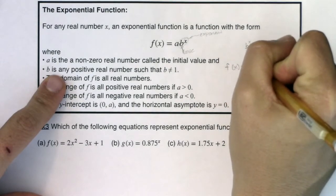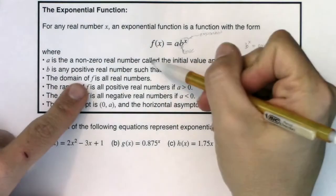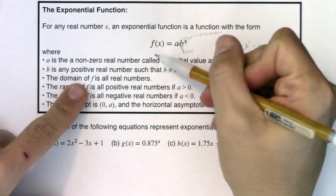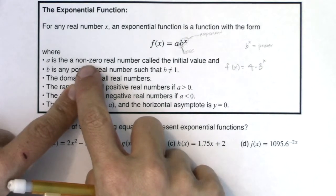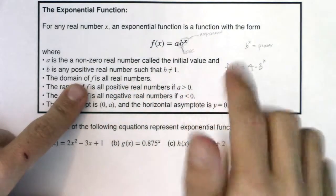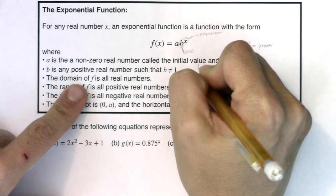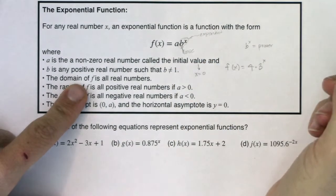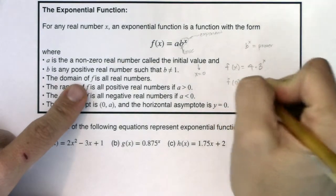When b is any positive real number such that b isn't equal to 1, let me just give you a for instance while we're introducing this idea. So let's say f(x) was 4 times 3 to the x. I want to really unpack these first two bullet points so we can understand them.